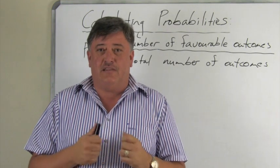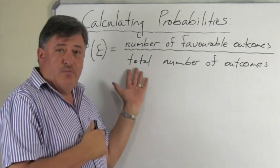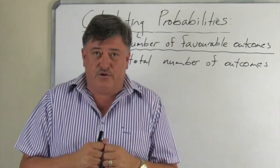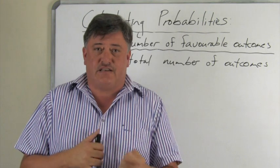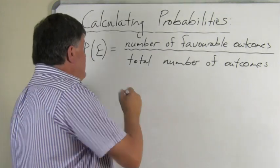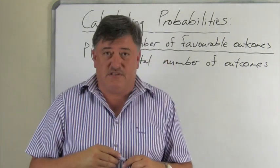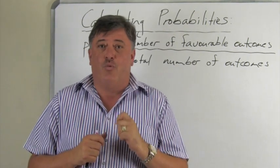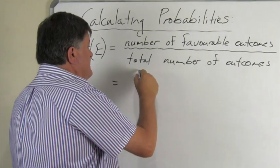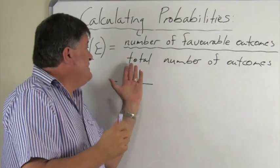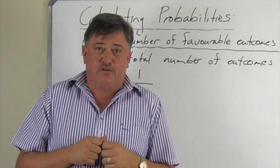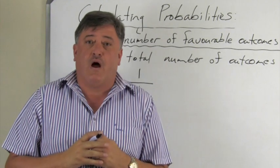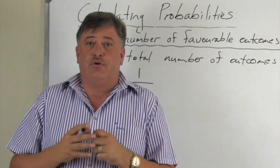Now we're going to calculate probability using our formal definition. If I take a die and ask what is the probability of getting a six when I roll it, we look at our favorable outcomes. There's only one six on a die, so favorable outcomes equals one. The total number of outcomes on a die is six, therefore the probability is one over six.